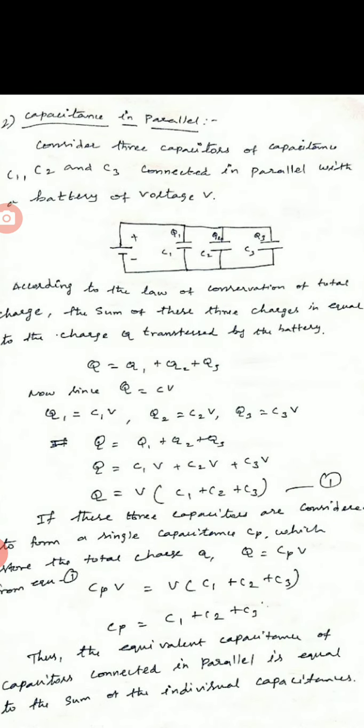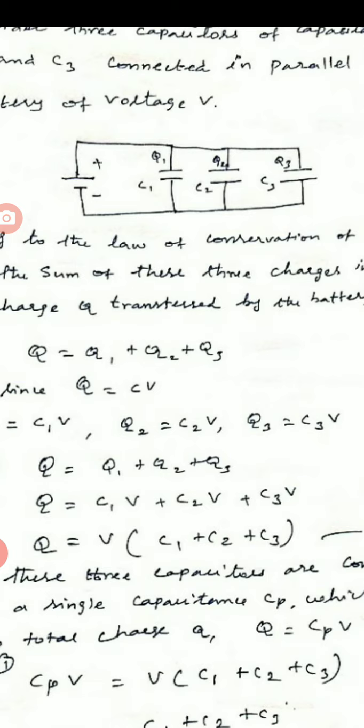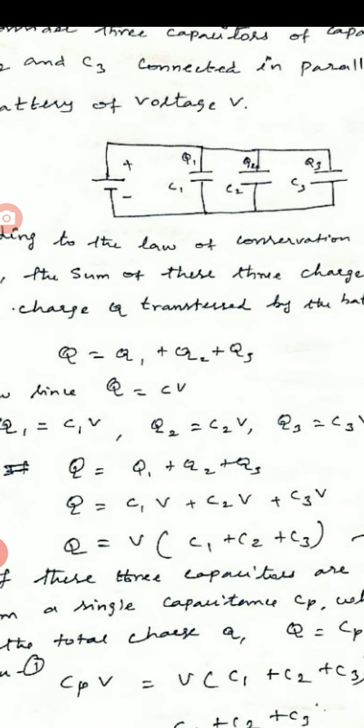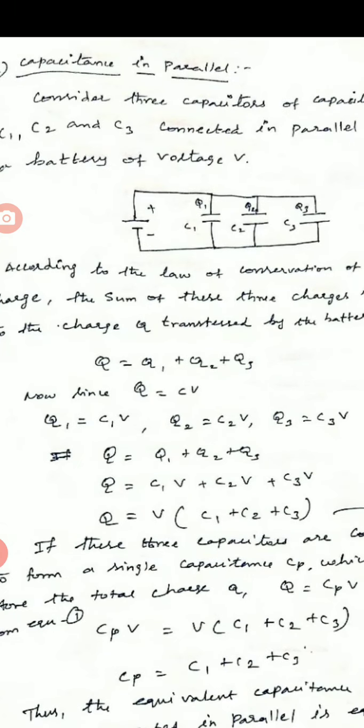This means that total charge Q is equal to the sum of individual charges. Now Q is equal to CV, where Q is the charge, C is the capacitance and V is the voltage of the battery.